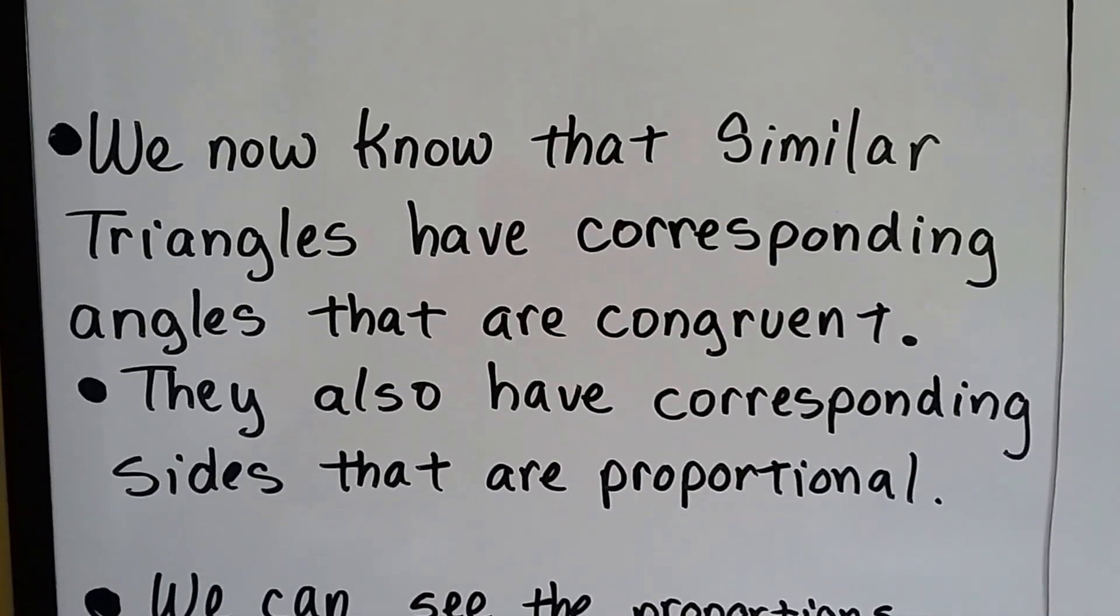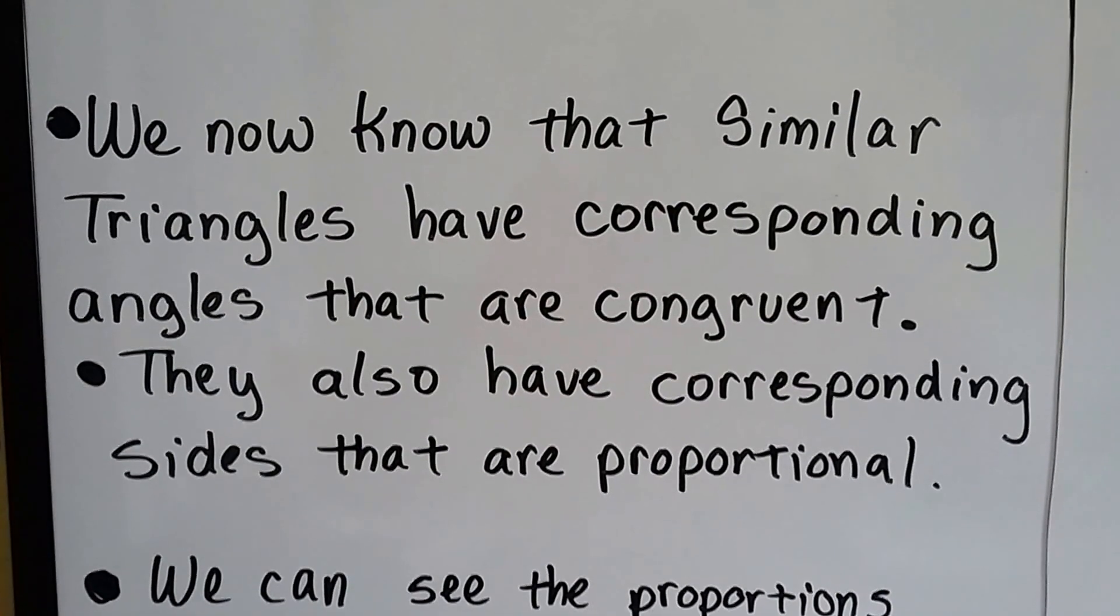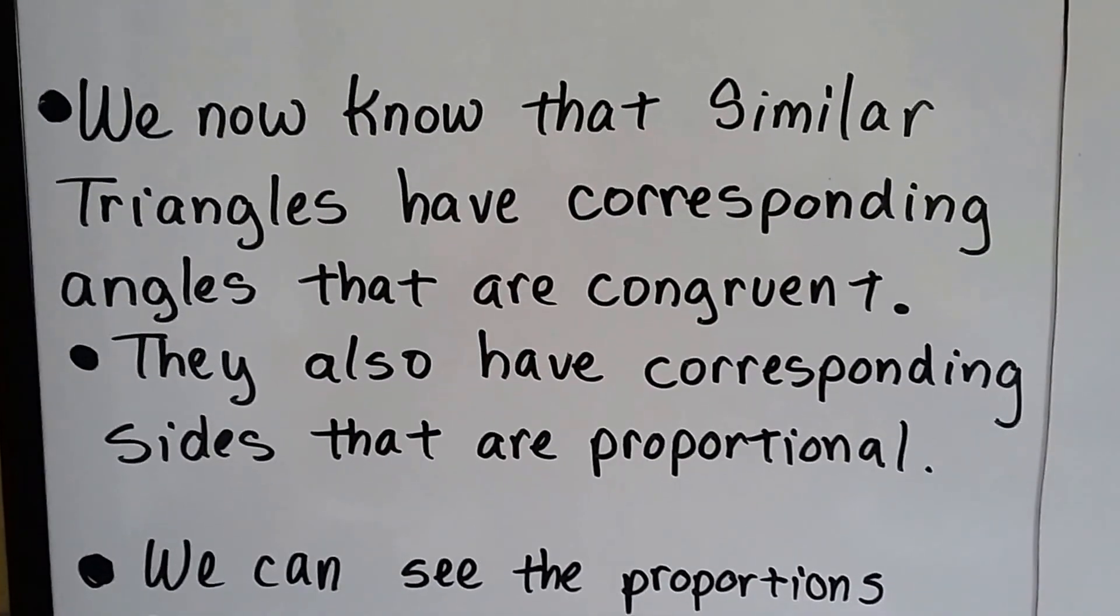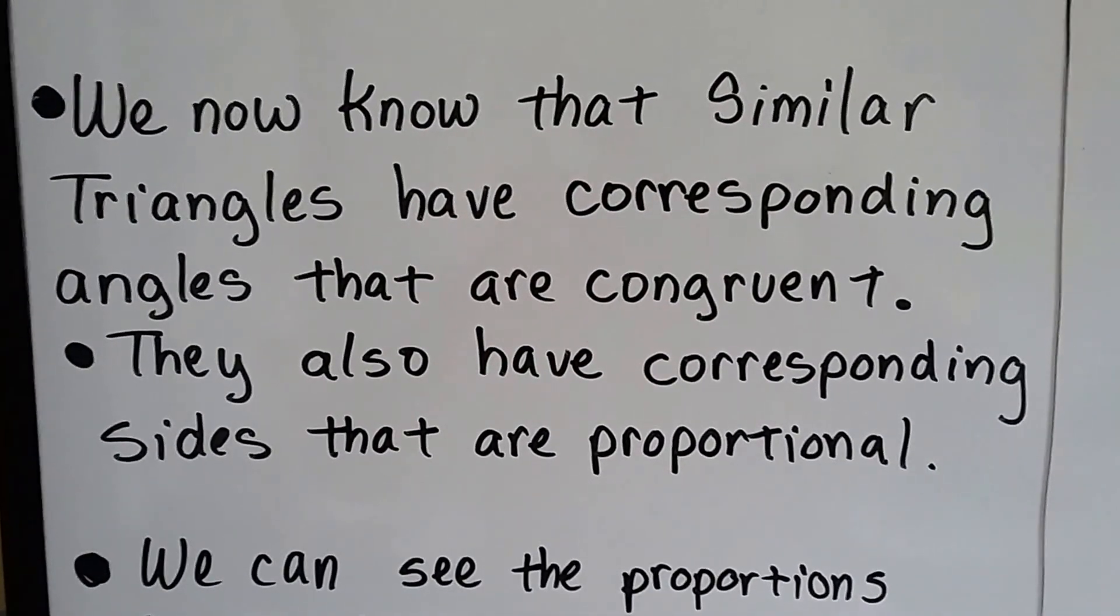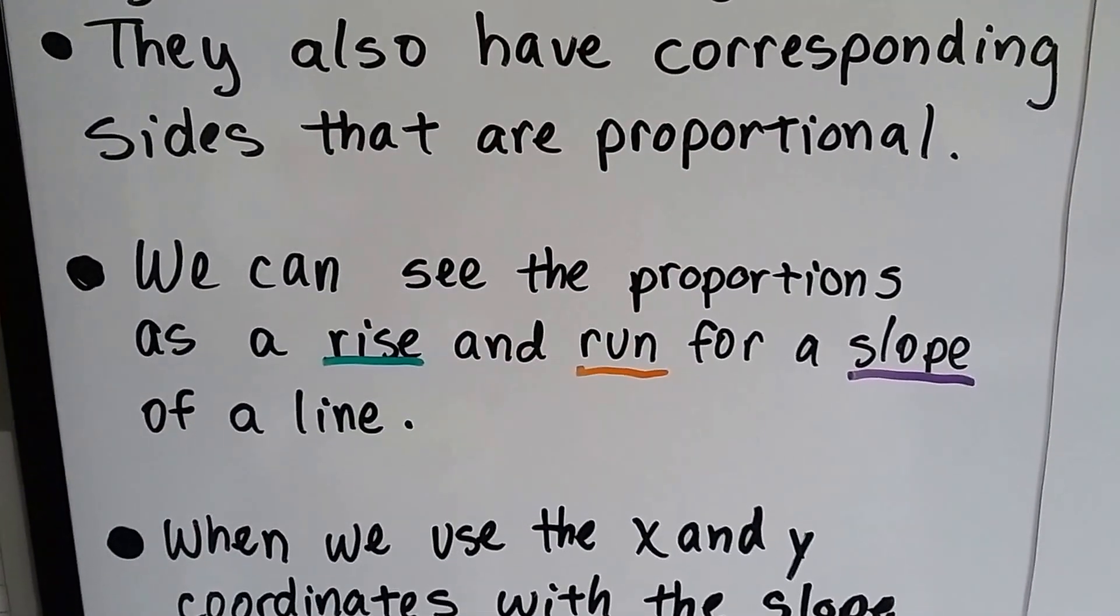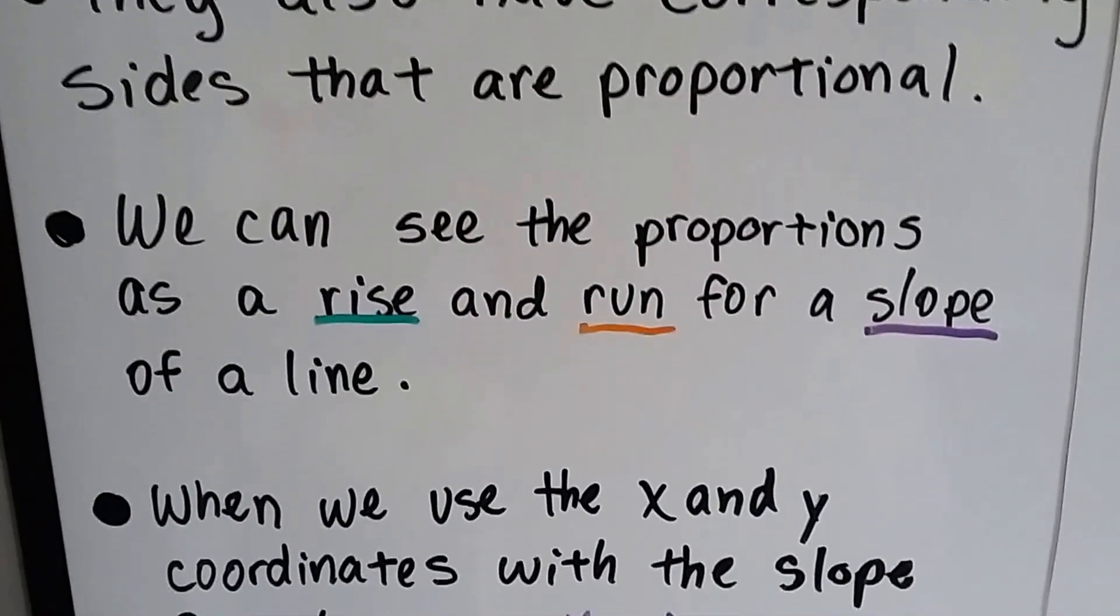From the last few videos, we now know that similar triangles have corresponding angles that are congruent. They also have corresponding sides that are proportional, and we can see the proportions as a rise and run for a slope of a line.